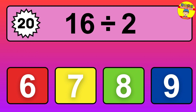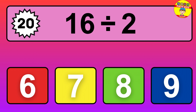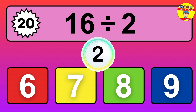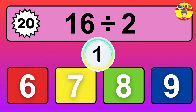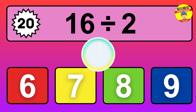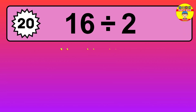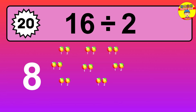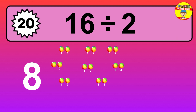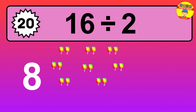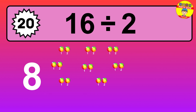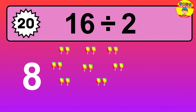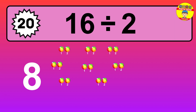16 divided by 2 is... time to think. Let's go to the solution. Divide the number 16 by 2. Each group contains 2 units, so dividing 16 by 2 results in 8 equal groups. Thus, the result is: 16 divided by 2 equals 8.